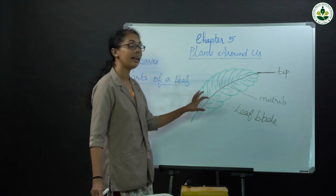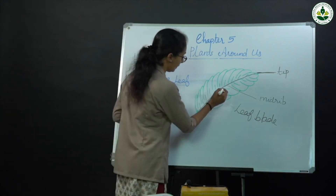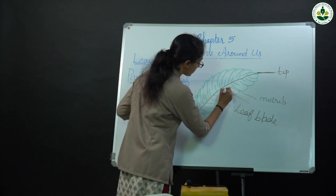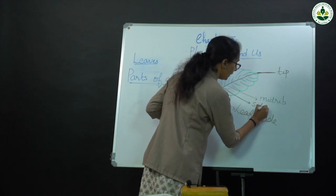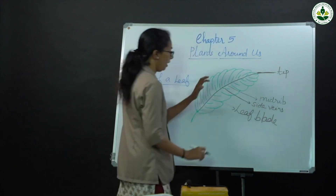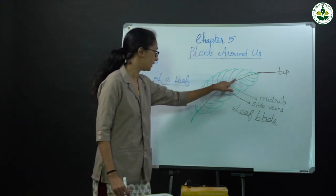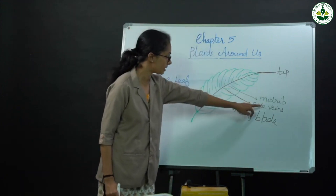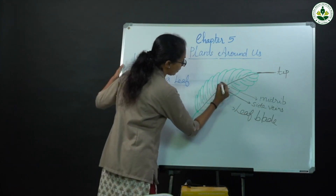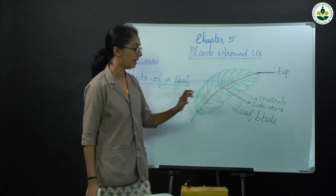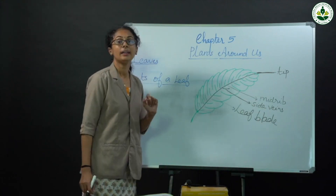Small tubes running along with the blade are known as side veins. So: flat part is leaf blade, topmost part is tip, thin tube in the middle is mid rib or main vein, and small small tubes are known as side veins.